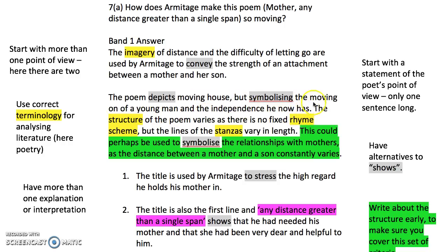The structure of the poem varies as there's no fixed rhyme scheme but the lines of the stanzas vary in length - well, so what? You don't get any marks for that. But now the candidate does something clever: this could perhaps be used to symbolize relationships with mothers as the distance between a mother and son constantly varies. Here the candidate is thinking that Armitage is trying to make a general point - it's not just this one relationship; he's using that relationship to talk about mother-son relationships generally. That's another technique to get into the A-star.